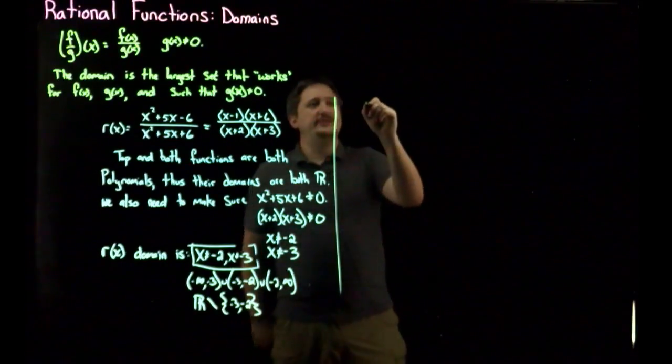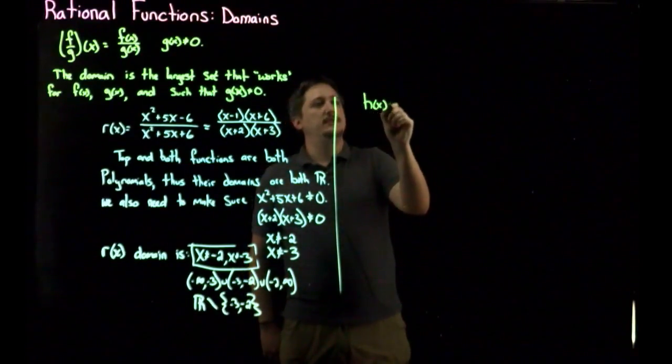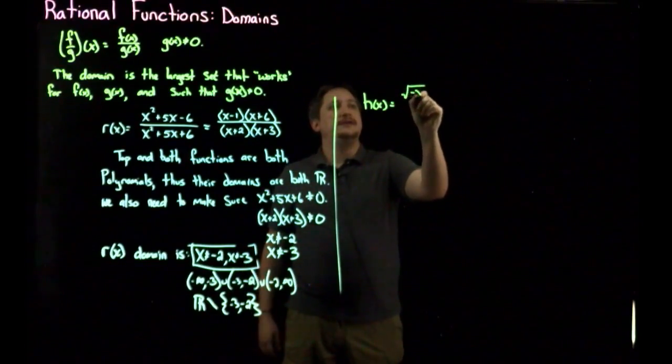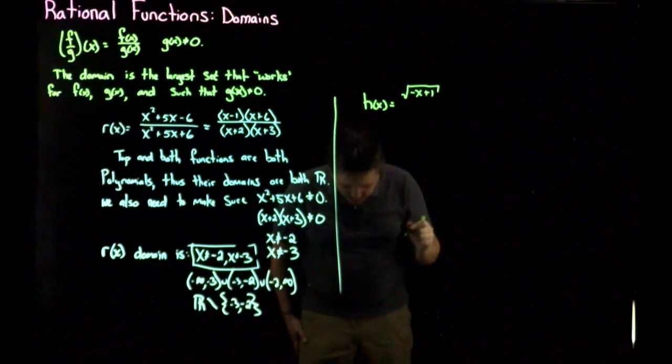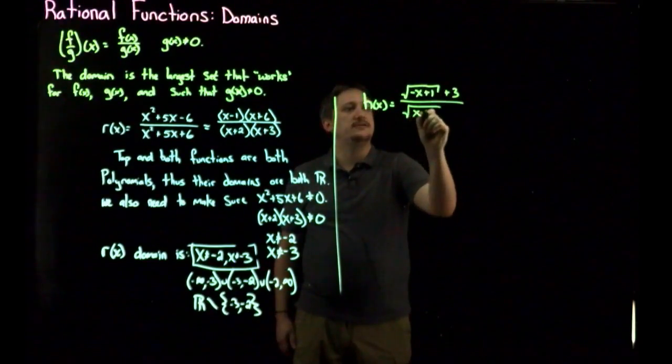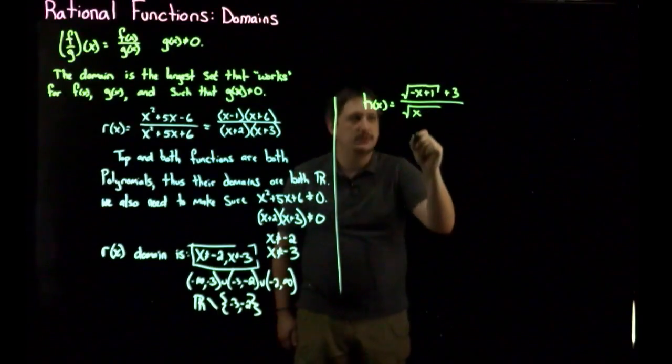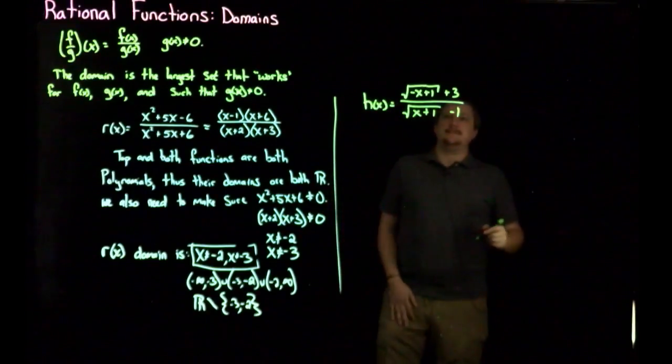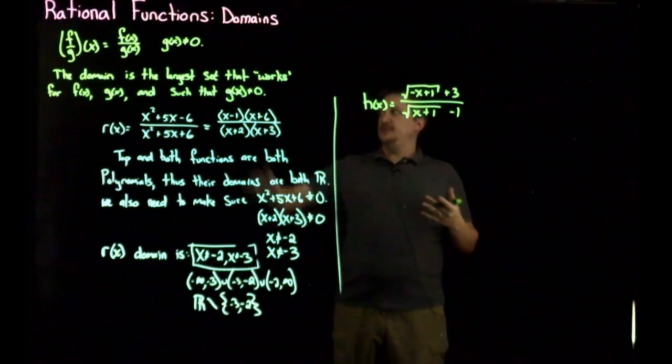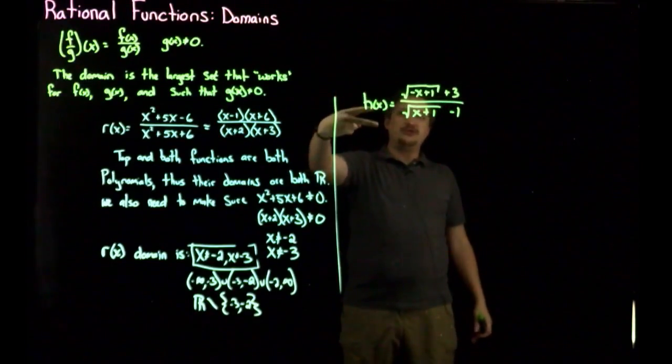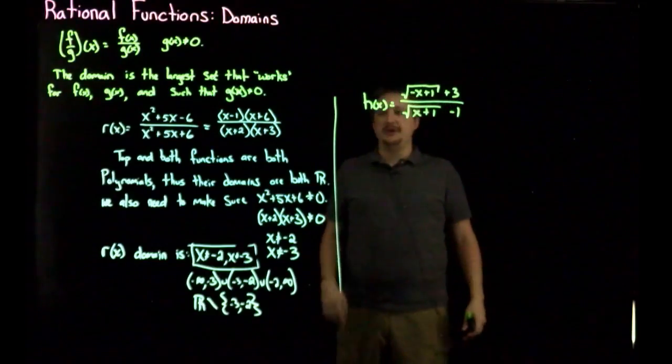And I wrote down one to make sure it's a little more interesting. So let's say that h of x is square root of negative x plus 1 plus 3 over square root of x plus 1 minus 1. Same sort of deal here. I want to look at the restriction that's necessary for the top, the restriction that's necessary for the bottom. So I'm going to look at the domains of both of those.